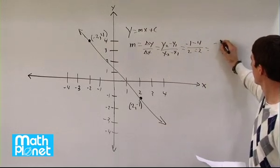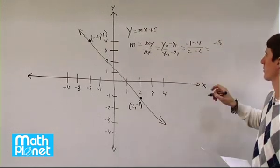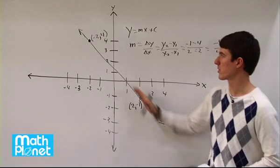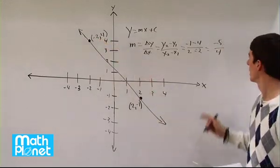So that gives us negative five here, and two minus negative two is four, so negative five over four. And that makes sense. It's a negative number, it's a negative slope, going down to the right.